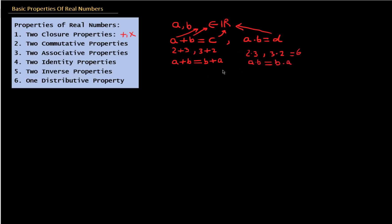But this is only for addition and multiplication. There is no such property for subtraction. A minus B is not equal to B minus A. Similarly, A divided by B is not equal to B divided by A — unless of course A and B are the same number. So A times B equals B times A — this is what the commutative property says.